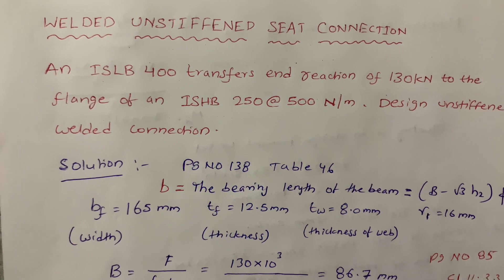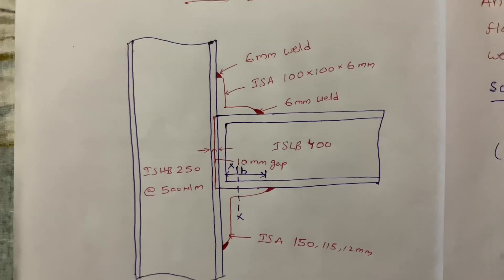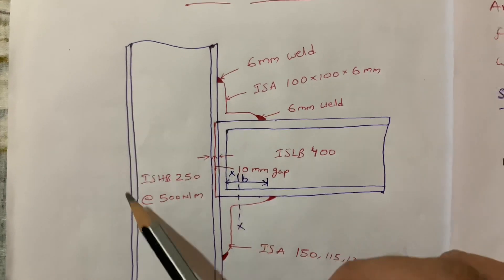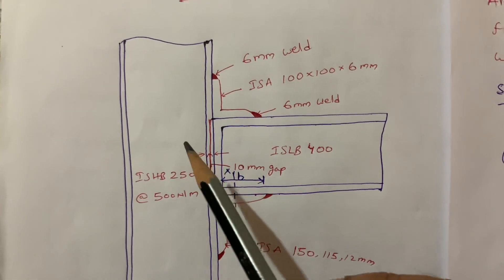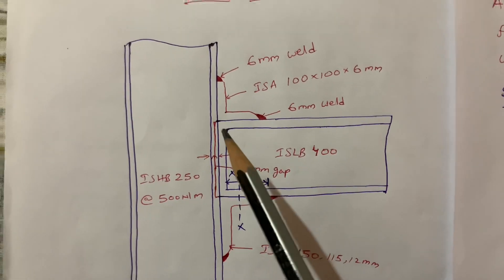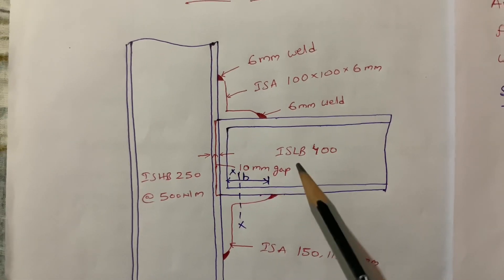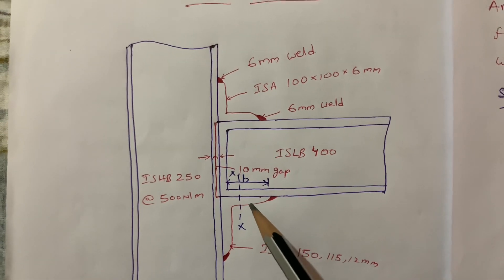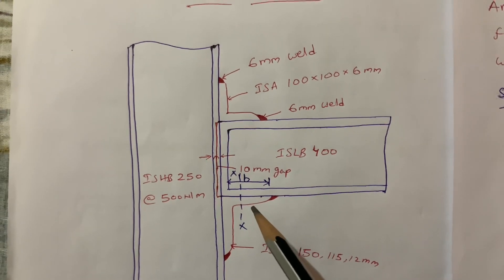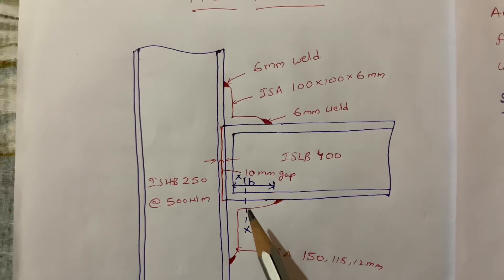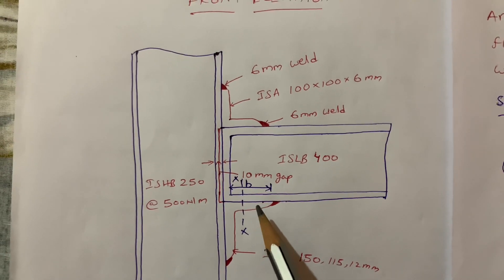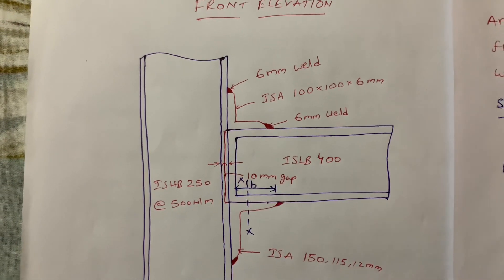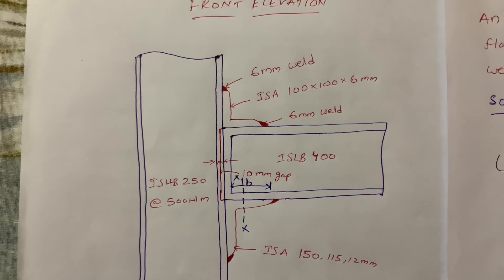I will show you the diagram. This is ISHB 250 — this is the flange part. For this flange we are going to connect the ISLB 400 by using a cleat angle and seat angle. So we are going to design an unstiffened seated connection using welding.